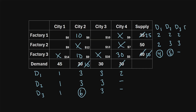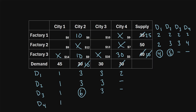Moving to iteration four, in the first row the lowest shipping cost is eight and the next lowest is ten, giving a difference of two. In the next row, the lowest is nine and the second lowest is thirteen, giving a difference of four. Along the columns: column one has a lowest of eight and next lowest of nine, difference of one. Column three has a lowest of ten and second lowest of thirteen, giving a difference of three.